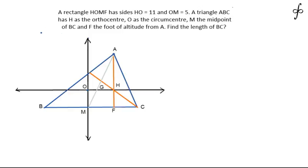Let's discuss this geometrical question which says that a rectangle HOMF has side lengths HO equal to 11, OM equal to 5, and triangle ABC has H as the orthocenter and O as the circumcenter. M is the midpoint of side BC and F is the foot of the altitude from A on BC. We need to find the length of side BC.